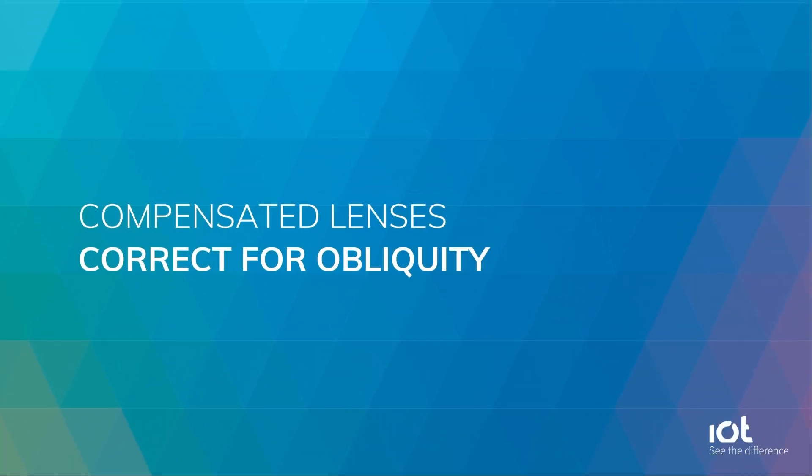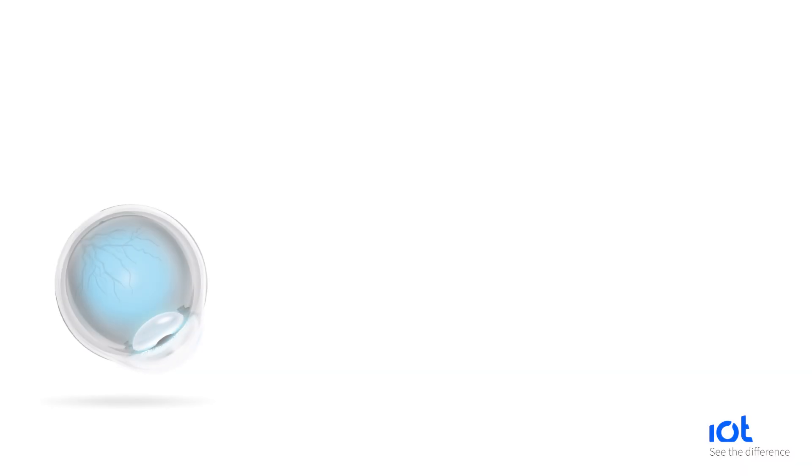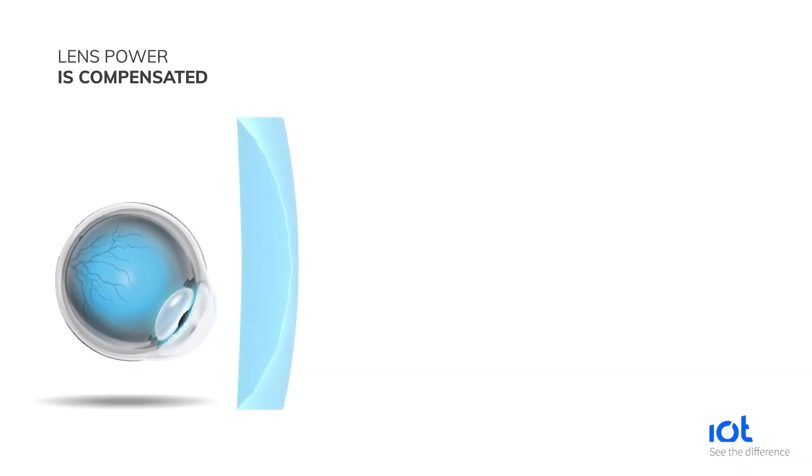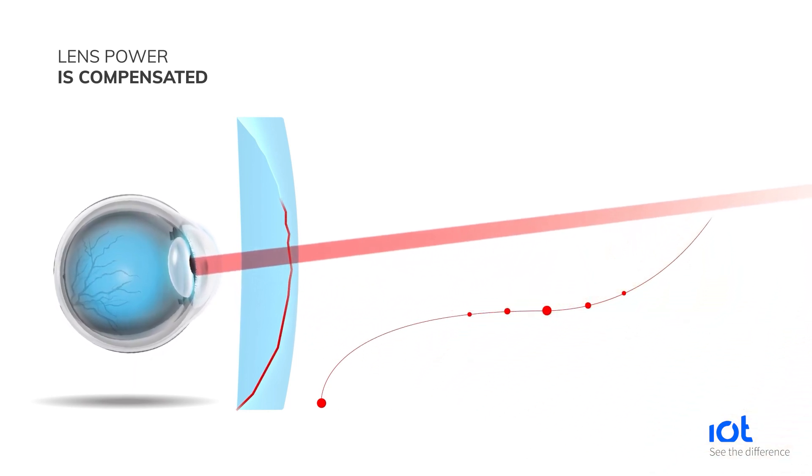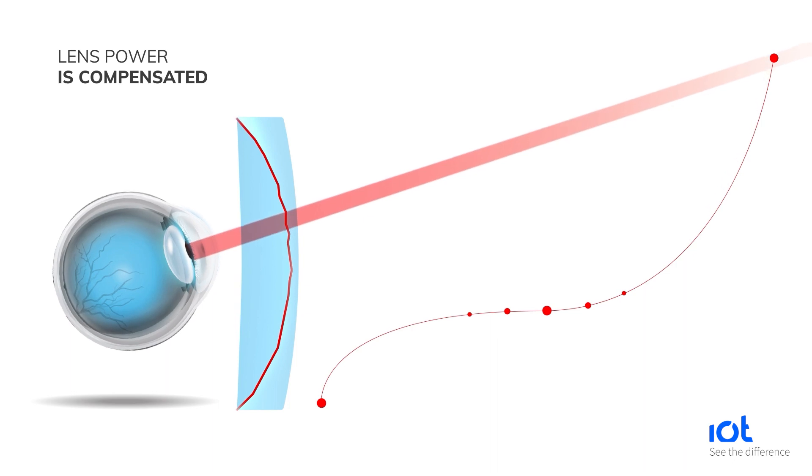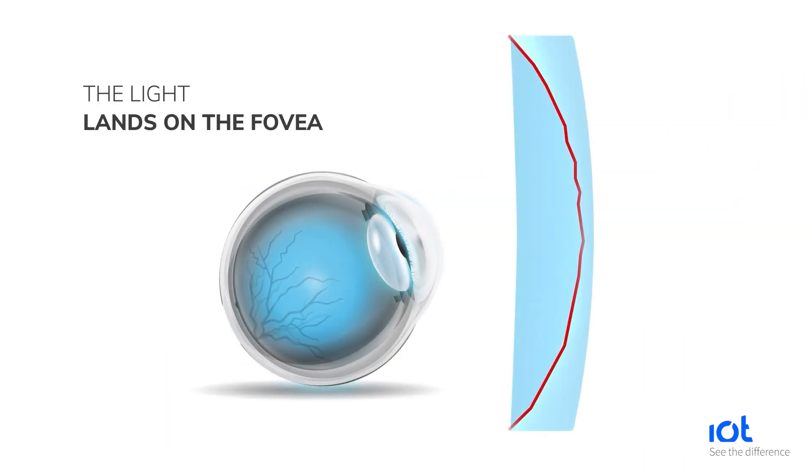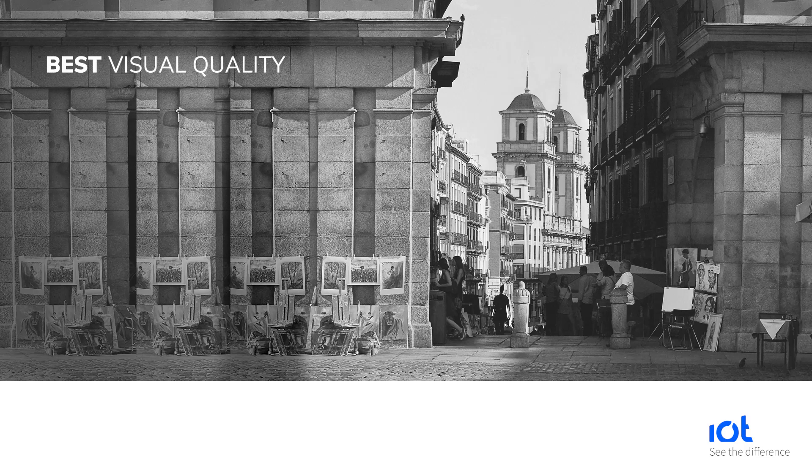Compensated lenses consider the real-life environment and actual lens position in front of the patient's eye. Eye rotation and various viewing distances are simulated. The lens power is modified, or compensated, point by point across the entire surface of the lens. This corrects for oblique aberrations and ensures all light rays focus on the fovea. The patient perceives his prescription through the lens and the best visual quality is achieved for all distances and gaze directions.